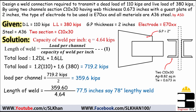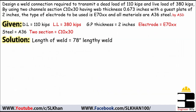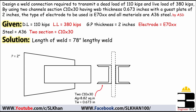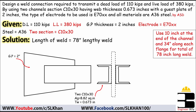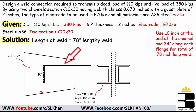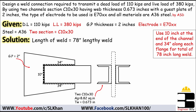Now for the weld distribution: we have two channels and one gusset plate (2" thick). Looking at the front elevation diagram, we provide 10 inches of weld at the end of each channel, plus 34 inches along each flange. The total weld length = 10 + 34 + 34 = 78 inches, which checks out.